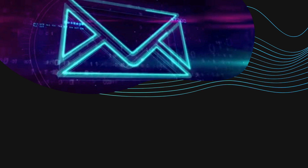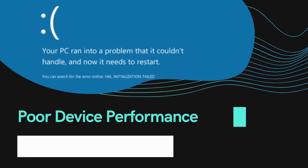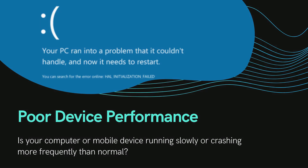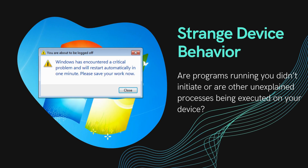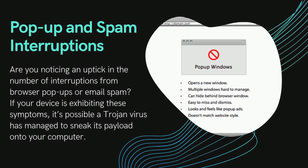How to recognize and detect a Trojan virus: because Trojans are used as a delivery device for many types of malware, if you suspect your device may have been breached, look for telltale signs such as poor device performance — your computer running slowly or crashing — strange device behavior, programs running you didn't initiate, or unexplained processes. Also watch for pop-up and spam interruptions, an uptick in browser pop-ups or email spam.